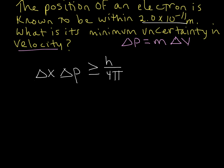Now, if you're saying to yourself, I don't know the mass of an electron — luckily, that is a constant we can simply look up. The mass of an electron is equal to 9.11 times 10 to the negative 31 kilograms. So now we have that too.